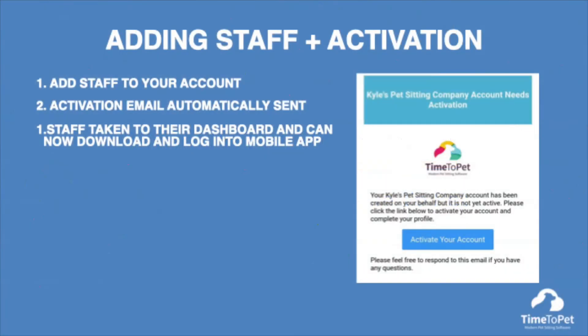The first step is to add your staff members to your Time2Pet account. Adding your staff members will automatically send an activation email that walks them through how to activate their accounts. Once they have followed the link in their email and created a new password in the portal, they will be taken to their dashboard. They can then download the mobile app and use the same login information to log in. We also have a video that walks you through how to add staff members and send activation emails, linked in the help article below this video.